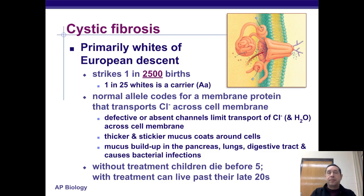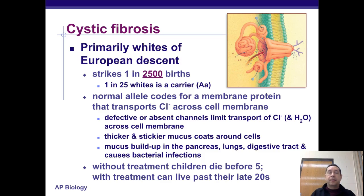Cystic fibrosis, which primarily affects whites of European descent, occurs in one out of every 2,500 births in the U.S., and one out of 25 whites is a carrier. There's a gene that transports chlorine across the cell membrane; in people with cystic fibrosis, this channel protein is defective or absent. This causes thick mucus coats around cells, especially in the pancreas, lungs, and digestive tract, leading to bacterial infections. Without treatment, children typically die before age 5; with treatment, they can live past their late 20s.